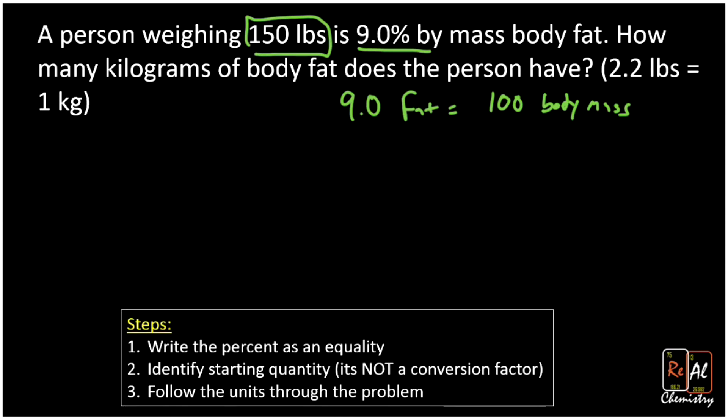The next step after we write the percent as an equality is to identify the starting quantity. That's 150 pounds, and we specifically know that's pounds of body mass—that's how much the whole person weighs, which is going to be important when we use our percent as a conversion factor. Eventually we want to get to kilograms.